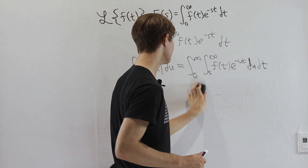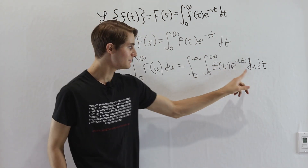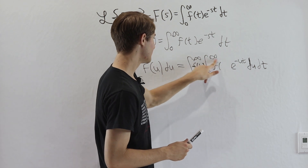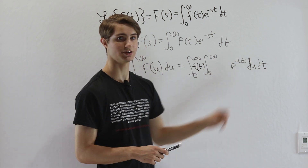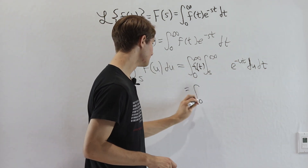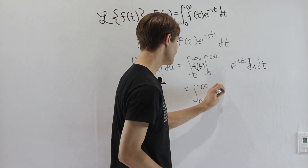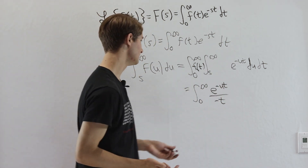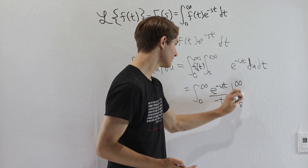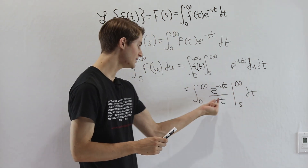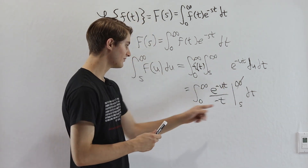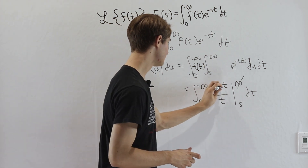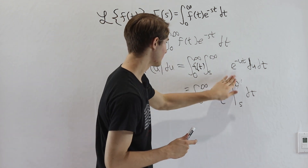This switch is useful because f of t does not depend on u, so it's a constant we can bring outside the inner integral. We're left integrating e to the negative ut with respect to u, which is straightforward — treating t as a constant, we get e to the negative ut divided by negative t. Evaluated from s to infinity, the upper bound gives 0 since e to the negative infinity is 0, and the lower bound gives e to the negative st over t.